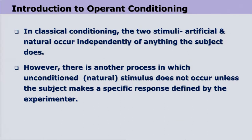As we saw earlier, in classical conditioning the organism was just passive — it did not have to do anything. The two stimuli, the natural stimulus and the artificial stimulus, were presented together without waiting for the subject to respond. However, there is another process in which the natural stimulus does not occur unless the subject makes a specific response expected by the experimenter. The process of learning starts from that particular response. Therefore, operant conditioning is also called instrumental conditioning because the first specific response by the subject is instrumental in this kind of conditioning.